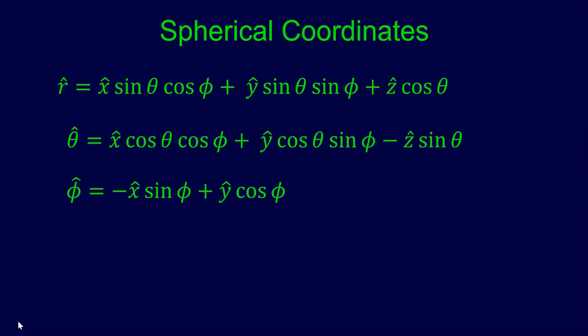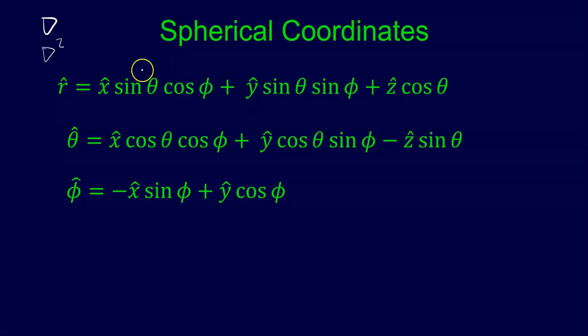As we move into three-dimensional quantum mechanics, you'll notice that we are using spherical coordinates. This is something that at some point in your career you've gone over, but when I first experienced this I was a little bit rusty on it. So I wanted to go over a little bit more of the background. Specifically, I want to show where the gradient in spherical coordinates comes from, and also the Laplacian, which is the gradient squared. Most folks don't cover this, so you can think about this as an extra topic, but I think it would be useful.